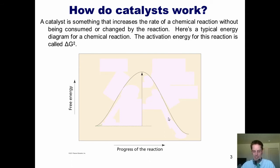Jokes aside, catalysis is extremely important. A catalyst is something that increases the rate of a chemical reaction without being consumed or changed by the reaction. Let me show you what I mean. Here's a typical energy diagram for a chemical reaction. Our reactants have the stability or energy level shown here, and our products, the stability or energy level shown down here. So in this particular reaction, you can see that the products are more stable than the reactants. The activation energy for this reaction is called ΔG‡. Or better said, the activation energy for this chemical reaction when no catalyst is used is indicated by this hill up here.